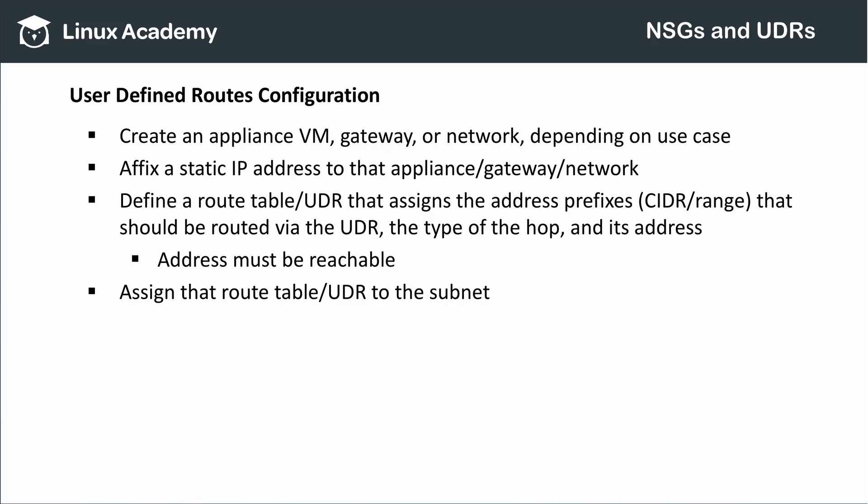You'll probably see questions in exam 70-534 about how to create a user-defined route. Generally speaking, you start by creating the hop you want to insert — be that an appliance virtual machine, a gateway, a network, or a subnet. Then you affix a static private IP address to that hop so it can be assigned as the next hop. Now you can create a user-defined route. The route indicates the CIDR range — also called address prefix — that should be directed through this user-defined route, the type of hop the traffic will take, and the IP address of that hop.